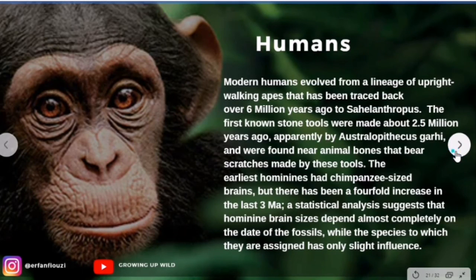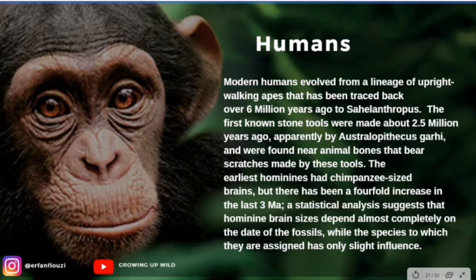As mammals slowly changed, apes came to be, and from them modern humans arose. Modern humans evolved from the lineage of upright-walking apes that has been traced back over 6 million years ago. The first known stone tools were made about 2.5 million years ago, apparently by Australopithecus garhi, and were found near animal bones with scratches made by these tools. The earliest hominins had chimpanzee-sized brains, but there has been a fourfold increase in brain size over the last three million years. A statistical analysis suggests that hominin brain size depends almost completely on the date of the fossil, while the species to which they are assigned has only slight influence.